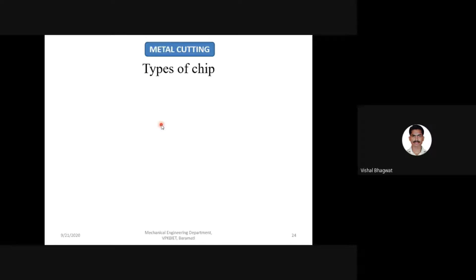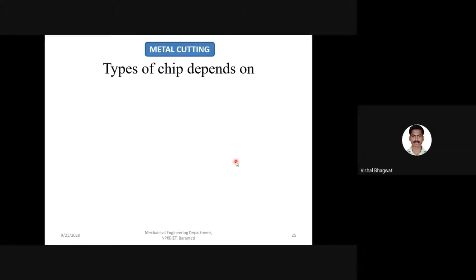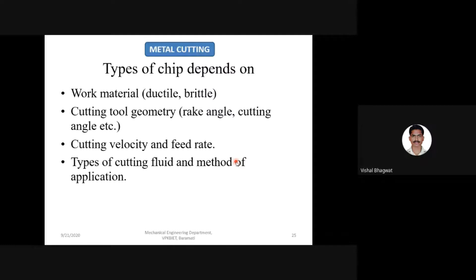Types of chips — well known: continuous chip, discontinuous chip, continuous chip with built-up edge, without built-up edge, and serrated chip. The type of chip depends on the work material (ductile or brittle), cutting tool geometry and rake angle (positive, negative, or zero), cutting velocity and feed (cutting parameters), and the type and method of application of cutting fluid.